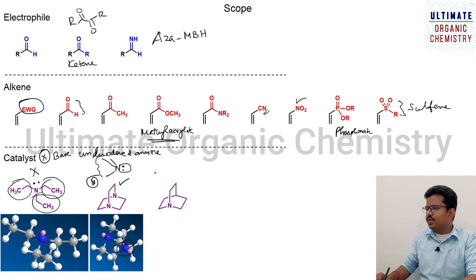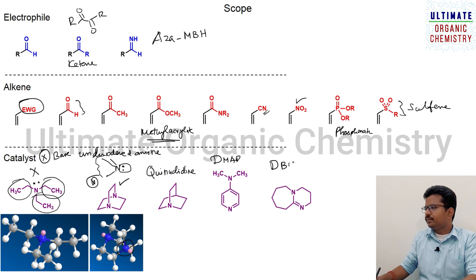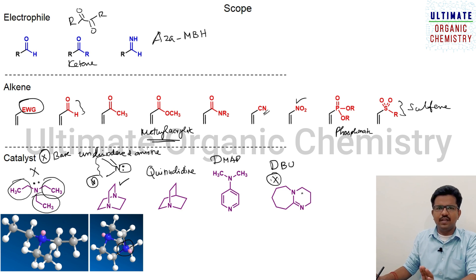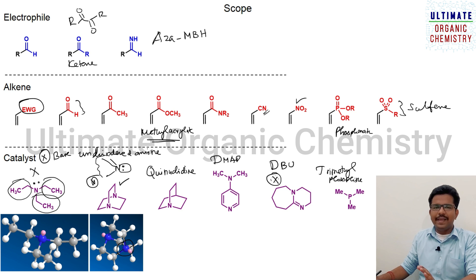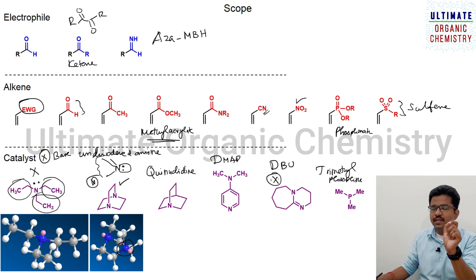Instead of DABCO, you can also use quinuclidine, DMAP, or DBU. In recent research, the DBU catalyst is very important and may be asked in CSIR examinations since only advanced questions are asked. Instead of nitrogen-based catalysts, you can also use phosphine as a catalyst; one example is trimethylphosphine. In general, the nitrogen should be tertiary and the lone pair should be sterically unhindered — meaning the carbon atoms around it should be rigid.